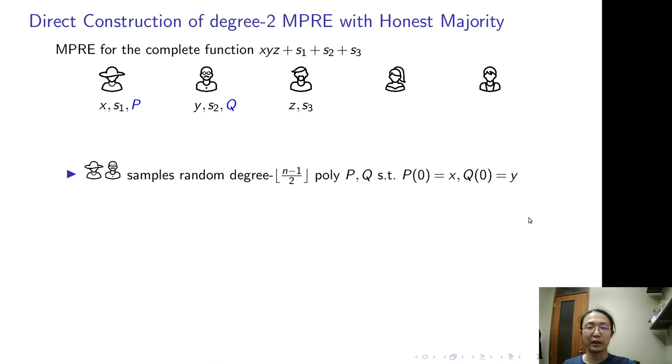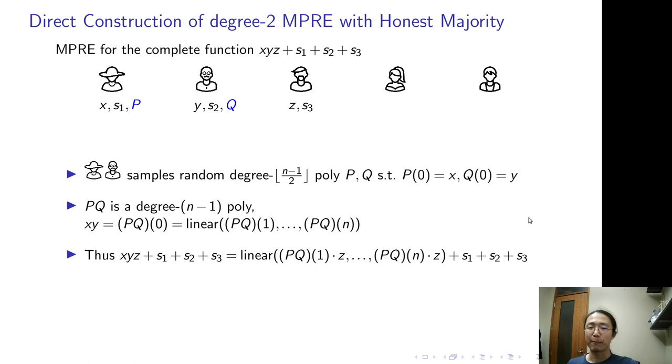So let the party holding X sample a random polynomial P, whose constant term is X. This is the Shamir's secret sharing of X. Similarly, let the party holding Y samples a random polynomial Q, which is the Shamir's secret sharing of Y. By standard analysis, the product of X and Y can be linearly recovered from the products of the shares. Therefore, the function output can be computed by the following formula.